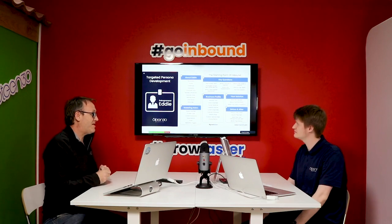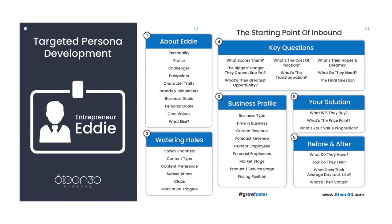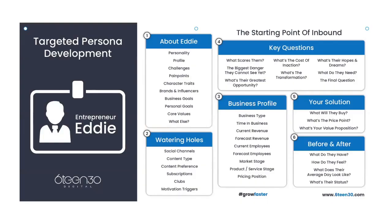Personal goals: what does achieving his business goals mean to Eddie? Does it mean more time with his family? Also on the About section, you have core values. There will always be something specific to the industry or person. We also look at brands and influencers. Why is Eddie's brands and influencers section important? Because when you're putting content out and doing display ads, if Eddie regularly reads the American Express magazine or Harvard Business Review, doesn't it make sense to put your message there where he hangs out?